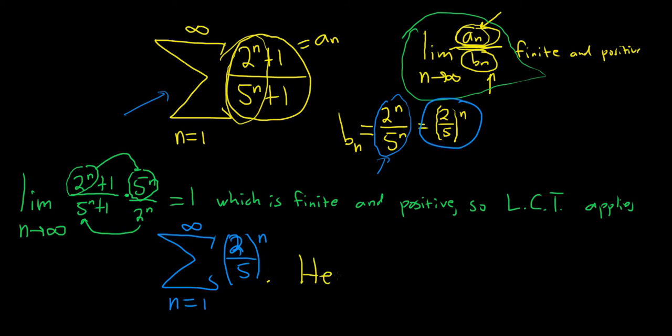So here, r is equal to 2/5. And that's less than 1 in absolute value. It's positive, so it doesn't matter that we put an absolute value. So it's less than 1. So this converges by the geometric series test, by the GST.